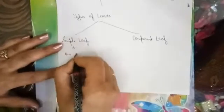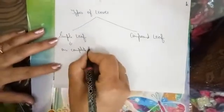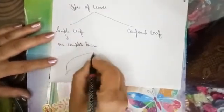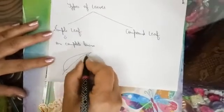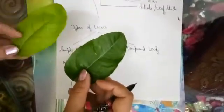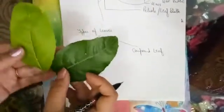In a simple leaf, there is one complete lamina — the lamina is not divided into any segments. There is a complete lamina. Examples include mango, banana, lemon, grapes, etc. You can see these leaves are simple leaves where they are not divided into segments.